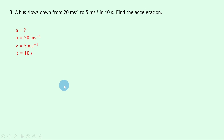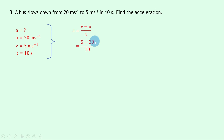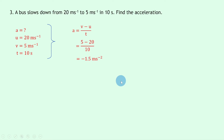The time is 10 seconds. Writing down our equation, we have a equals v minus u over t. Substituting in the numbers gives 5 minus 20 divided by 10. You'll notice that 5 minus 20 gives us a negative value, so we end up with minus 15 divided by 10, which is the same as minus 1.5 meters per second squared — i.e., the object's speed is decreasing by 1.5 meters per second every second. Note the negative sign indicates a deceleration.